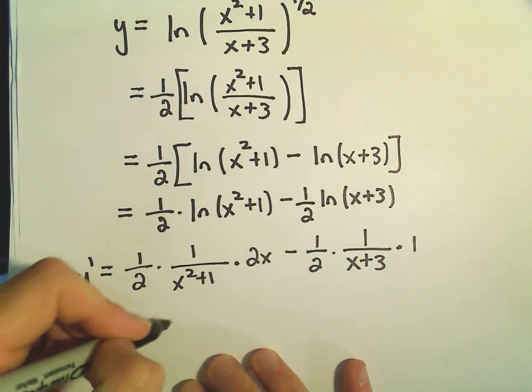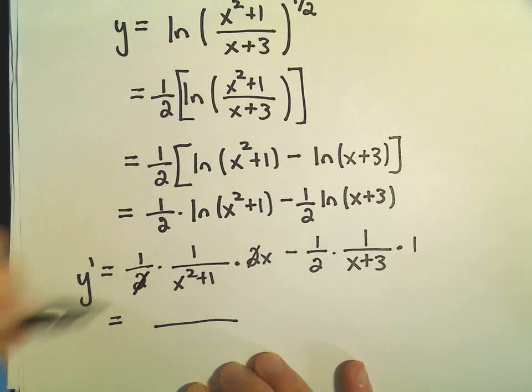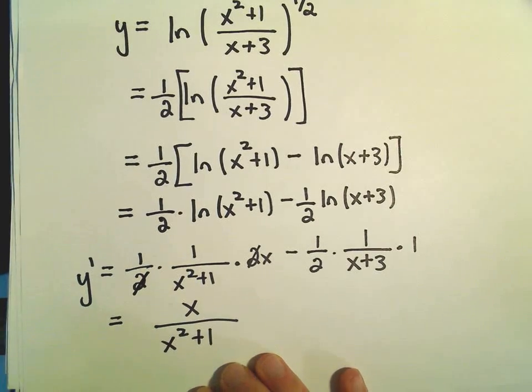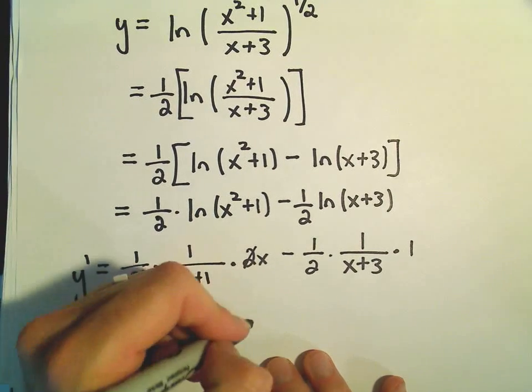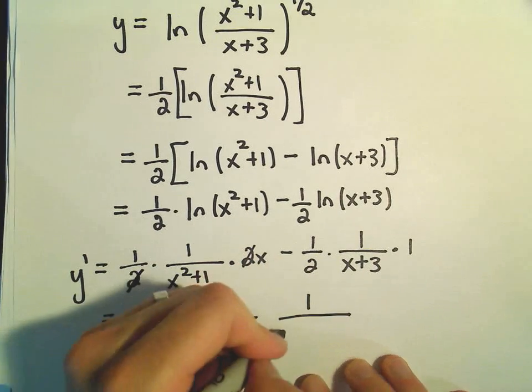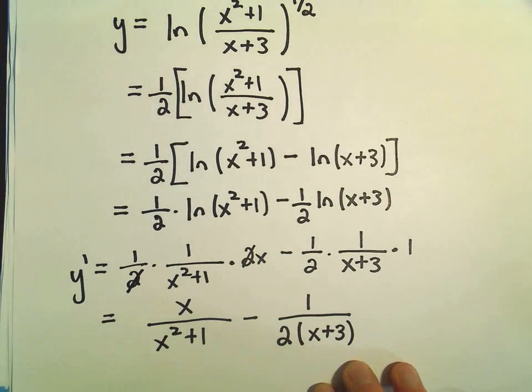And if we want to, we can sort of rewrite this. Notice we have a 1 half times a 2, so that would cancel. The x would go to the numerator. We would be left with x squared plus 1 in the denominator. The next part, the only thing in the numerator is 1. And I'm not going to multiply this out. I'm just going to leave it as 2 times the quantity, x plus 3.